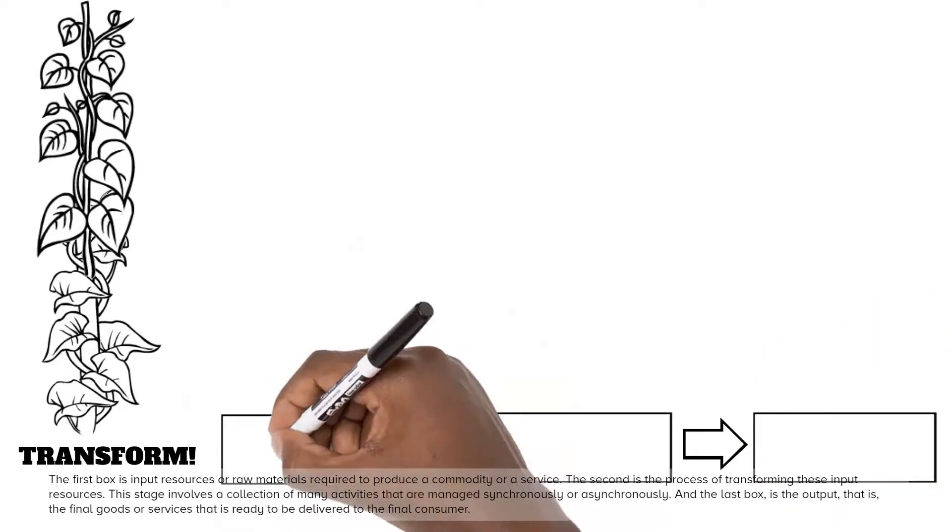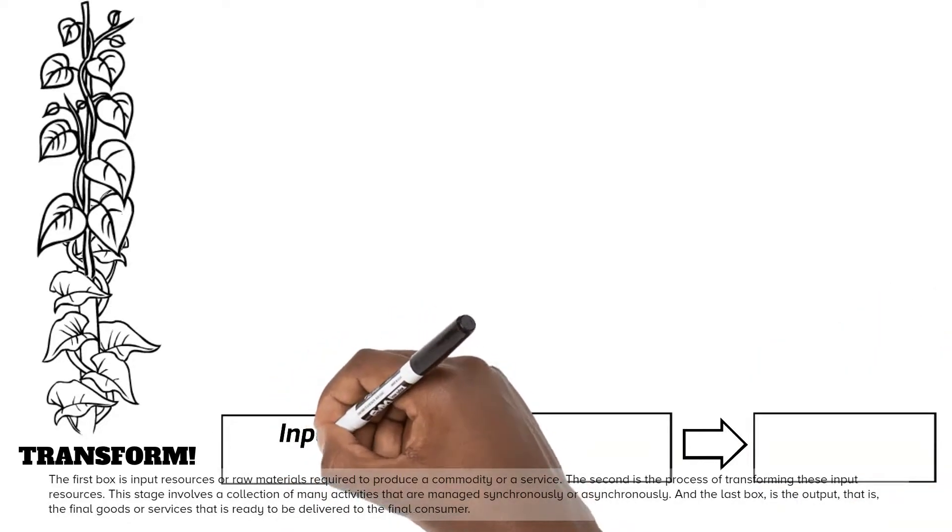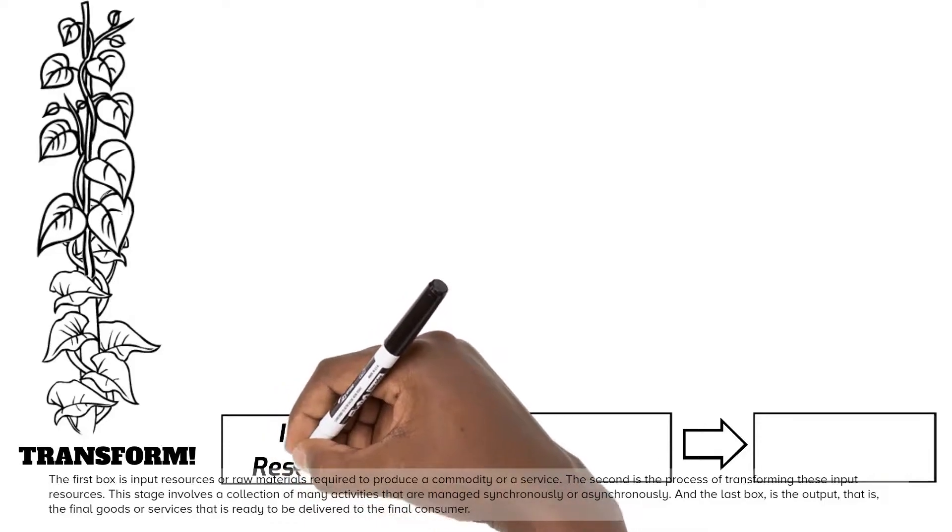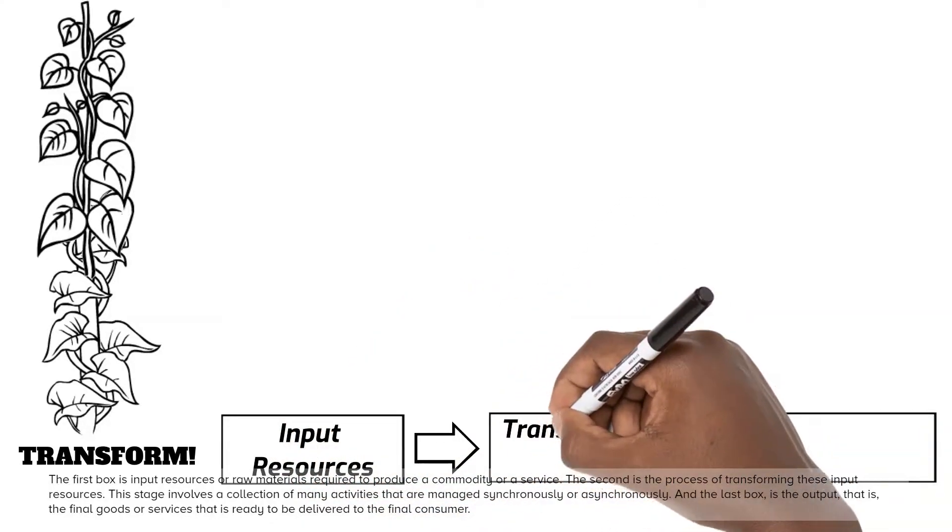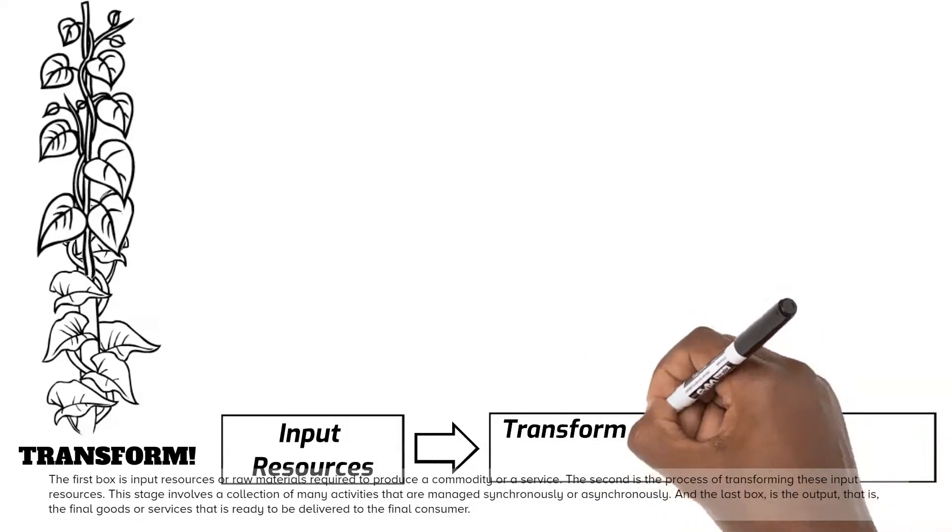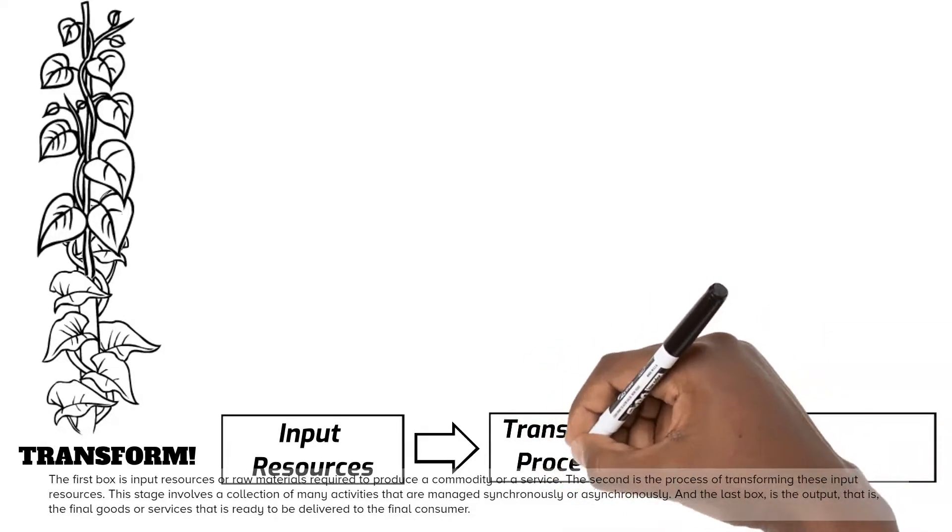The first box is input resources or raw materials required to produce a commodity or a service. The second is the process of transforming these input resources. This stage involves a collection of many activities that are managed synchronously or asynchronously.